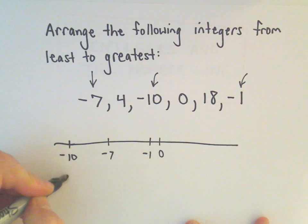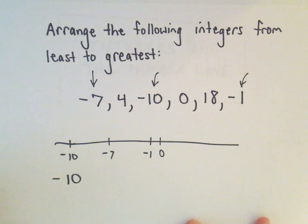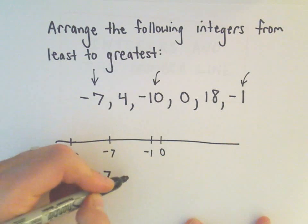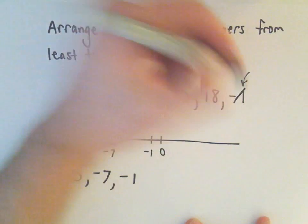So that means negative 10 would be our smallest number. Let's see, the next one would be negative 7, and then we would have negative 1. So that takes care of those.